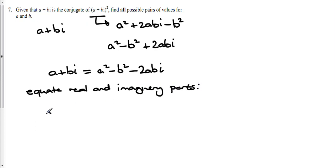So we'll have the real part: a equals a squared minus b squared, and the imaginary part: b equals minus 2ab. At this point, avoid the temptation to just divide both sides by b. If you do that, you're going to lose one of your solutions.